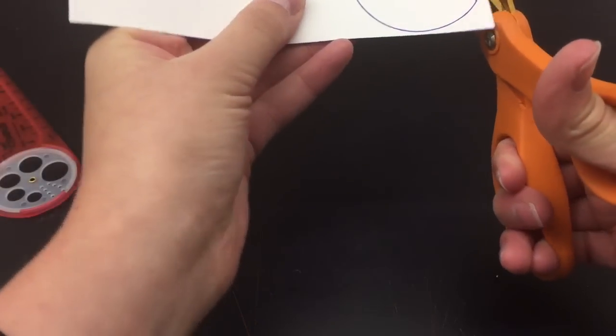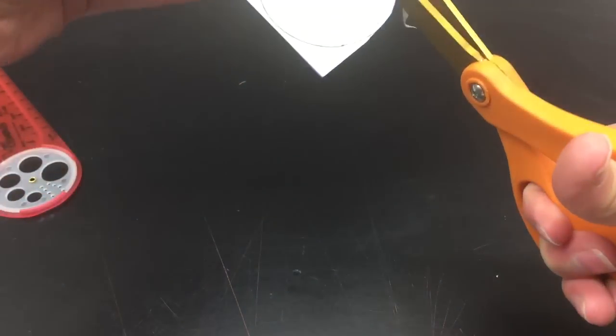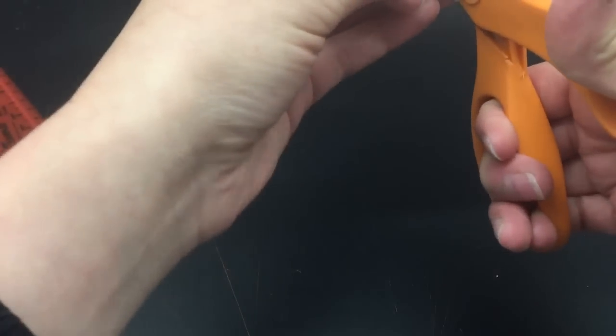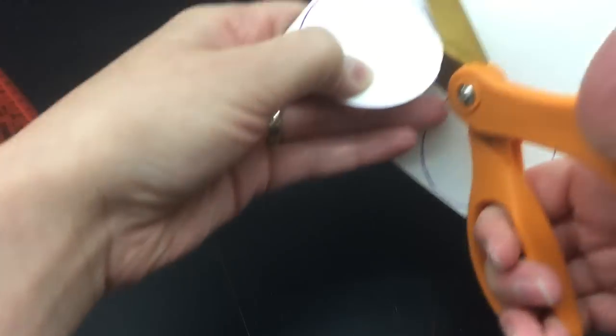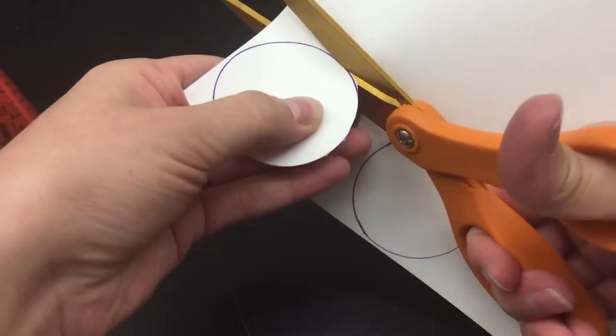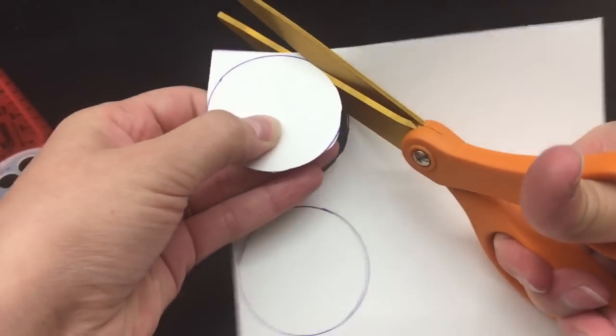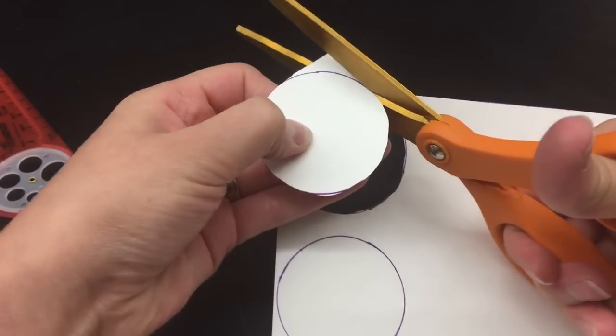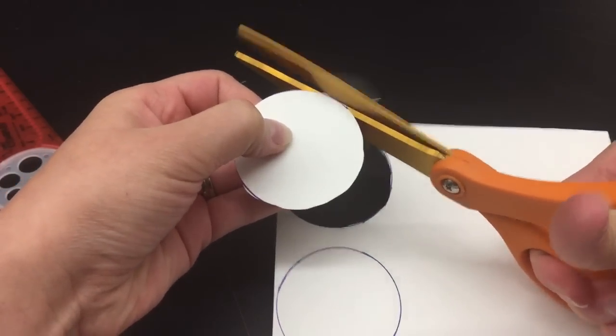Then I'm going to cut both of these circles out for my half ball.